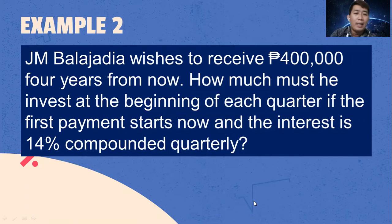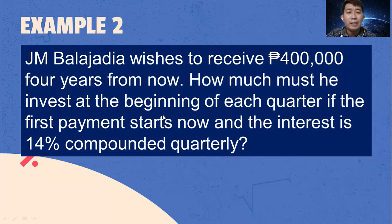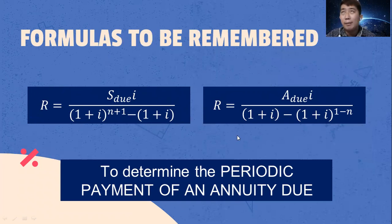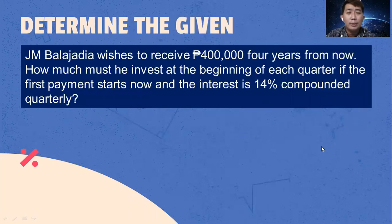Next example. J.M. Balahadja wishes to receive 400,000 four years from now. How much must he invest at the beginning of each quarter if the first payment starts now and the interest is 14% compounded quarterly?